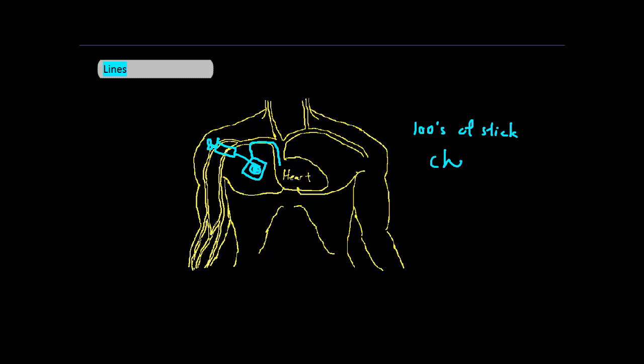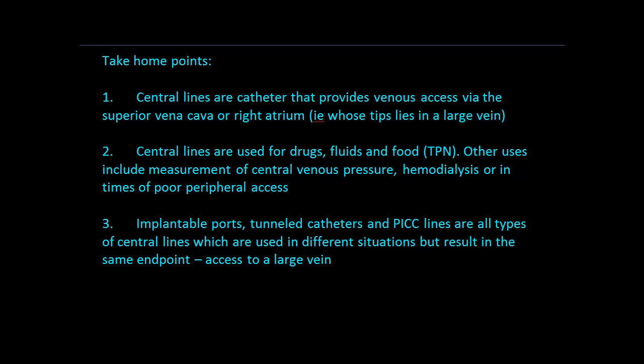Now for the take-home points. Central lines are catheters that provide venous access via the SVC or right atrium. They're used for drugs, fluids, and food. Other uses include measurements of CVP, hemodialysis, or in times of poor peripheral access. And finally, implantable ports, tunneled catheters, and PICC lines are all types of central lines which are used in different situations but result in the same endpoint, access to a large vein. Thank you.